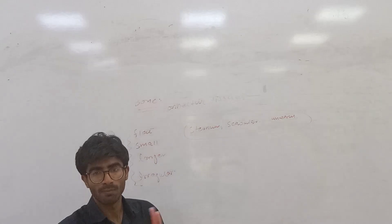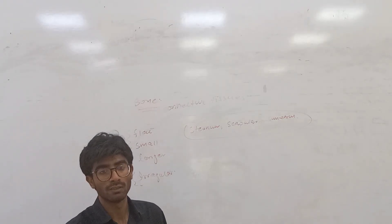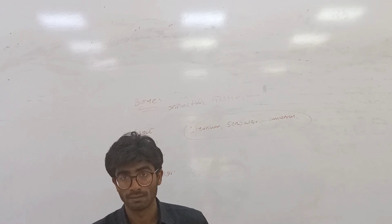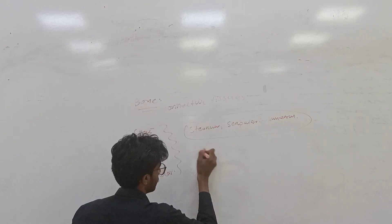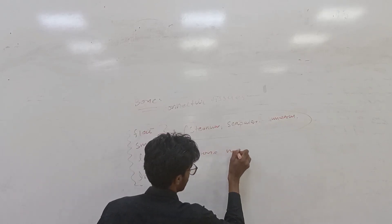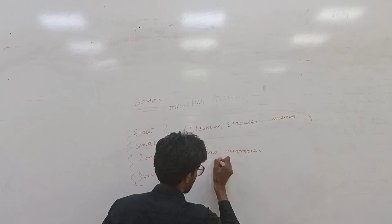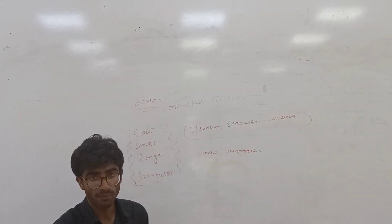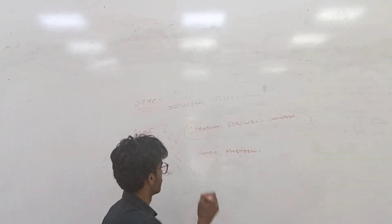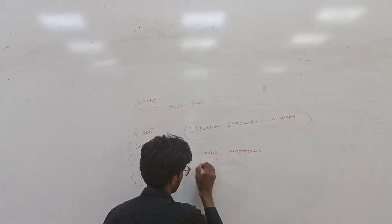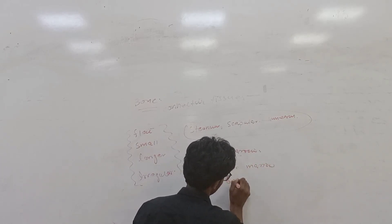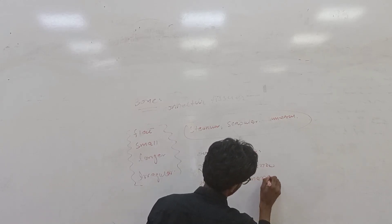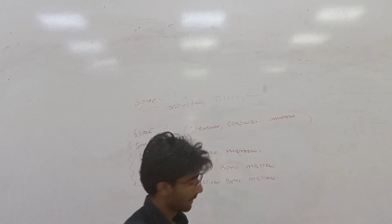We will talk about bone structure and what kind of bones are present. Now, the bones have bone marrow. There are two types of bone marrow: red bone marrow and yellow bone marrow.